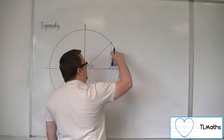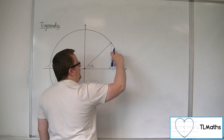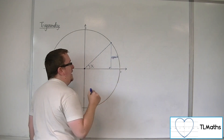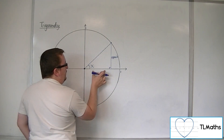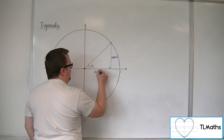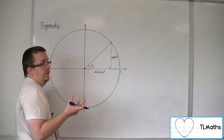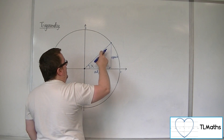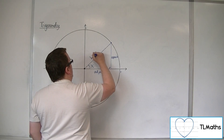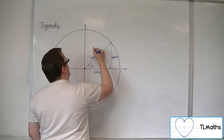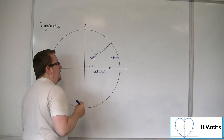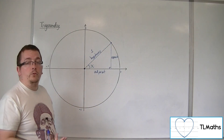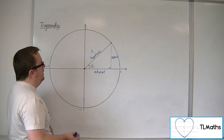If I drop a perpendicular from that point to the horizontal, this creates a right-angled triangle. This side of the triangle we refer to as the opposite side, because it is opposite the angle. This side is the adjacent, because it's the side next to the angle. This side is the hypotenuse, and in our case the hypotenuse is equal to 1, because it goes from the center of the circle to the outside of the unit circle.